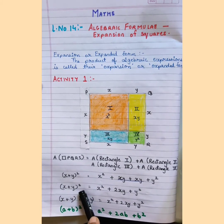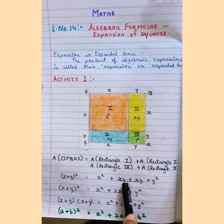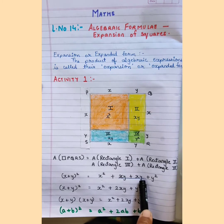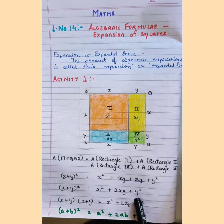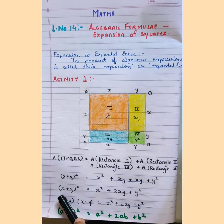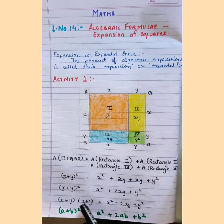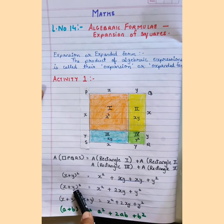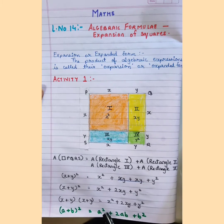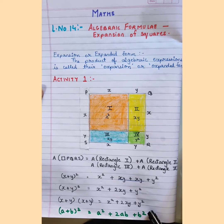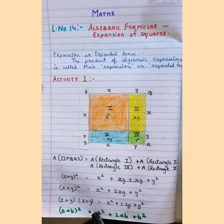So we write (X + Y) whole square equals X square plus XY plus XY plus Y square. Since XY and XY are like terms, we add them to get 2XY. So (X + Y) whole square equals X square plus 2XY plus Y square. Using variables A and B instead: A plus B the whole square is equal to A square plus 2AB plus B square. With this activity we derived our first algebraic formula.